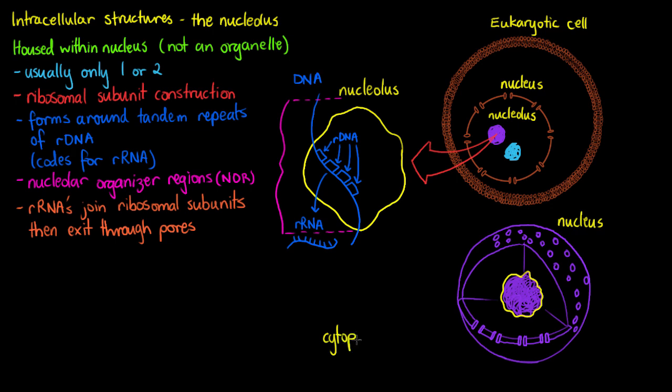And within our cytoplasm we have the ribosomes that are going to be constructing the protein component of our ribosomal subunit. So we have a small and large subunit that will then enter the nucleus and enter the Nucleolar Organizer Region.